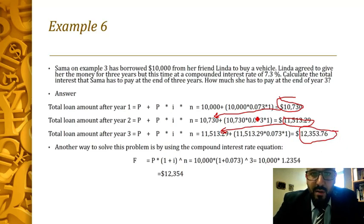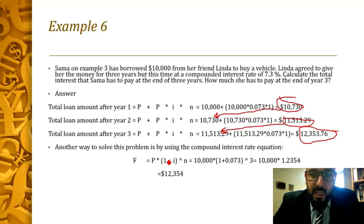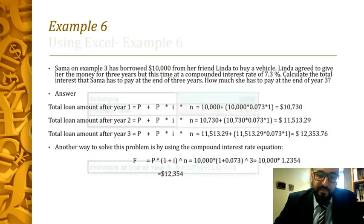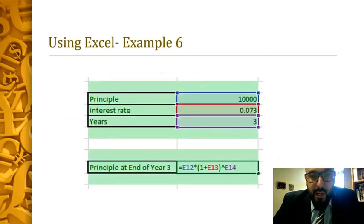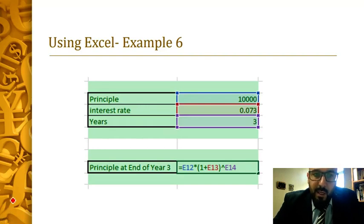Using the single formula approach: F equals P times one plus i to the power of n equals ten thousand times one plus 7.3% to the power of three, giving twelve thousand three hundred fifty-four dollars — the same answer. In Excel, enter the principal as ten thousand, interest rate 7.3%, and three years. The formula is equal to E12 times one plus 7.3% to the power of three, which gives you the same result.